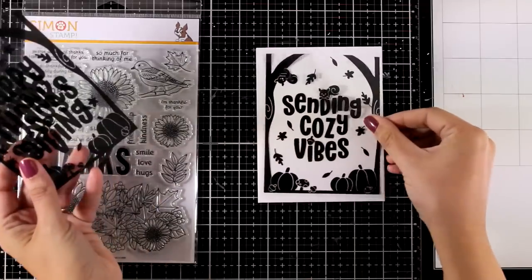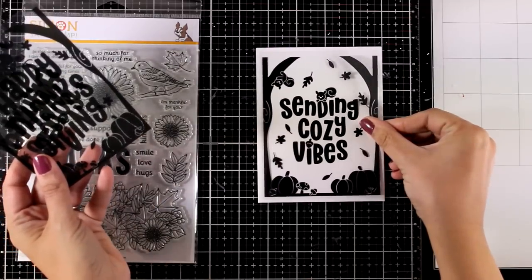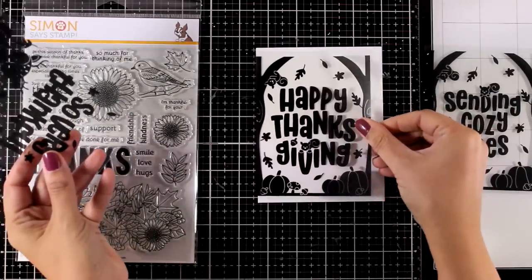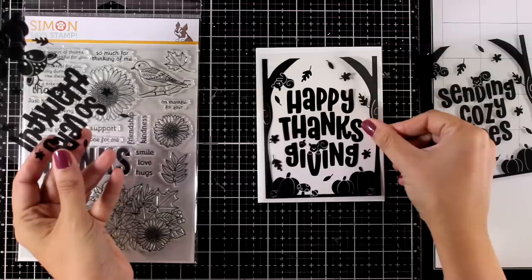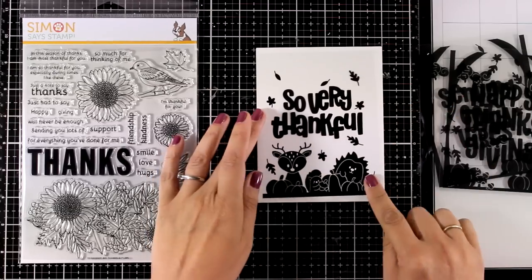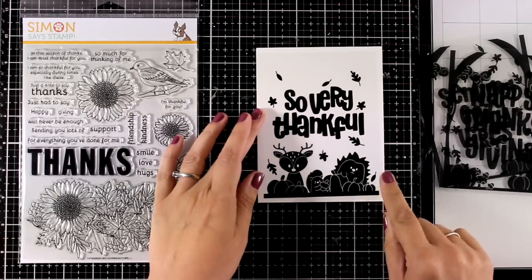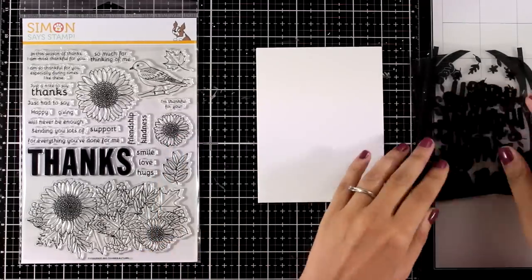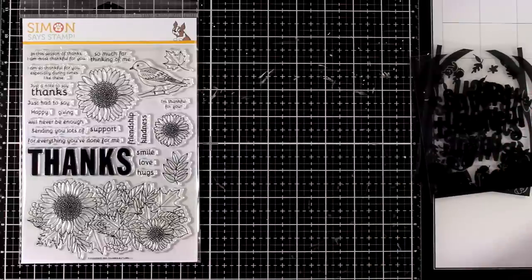You will also find in the kit three transfer sheets. Now these have lovely fall designs. As you can see here, they give you like trees and pumpkins as well as a big sentiment. And this one is super cute with all the critters at the bottom. You can use them as they are. If you want, they are great for creating shaker cards. But the actual idea is to use them with the foils.